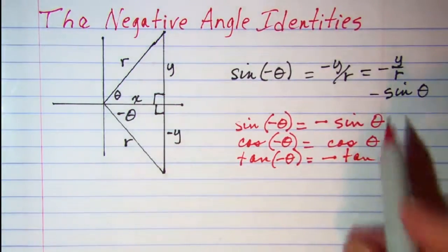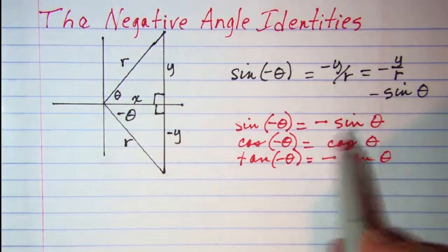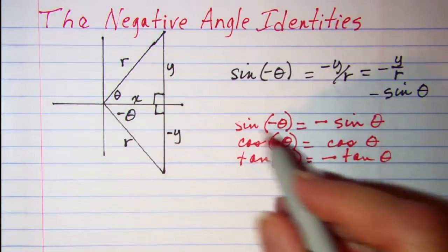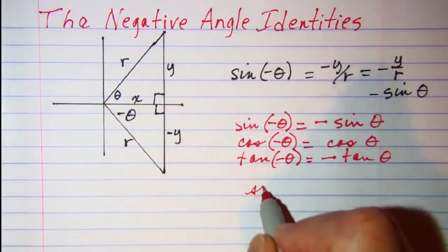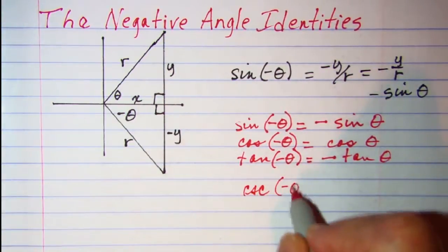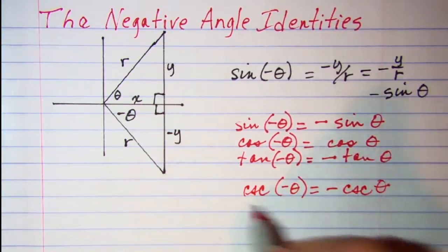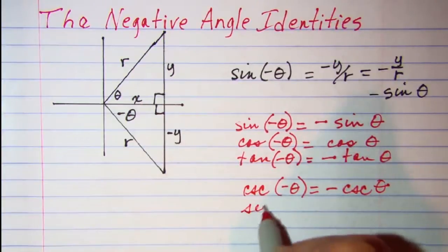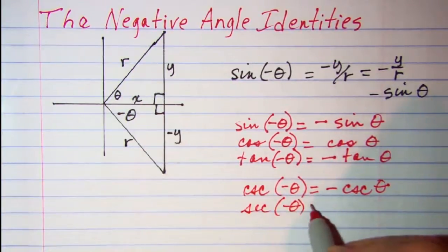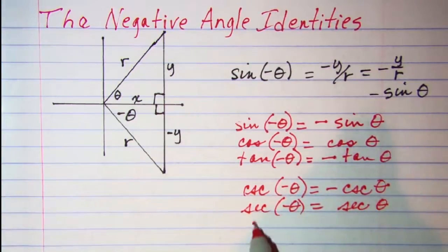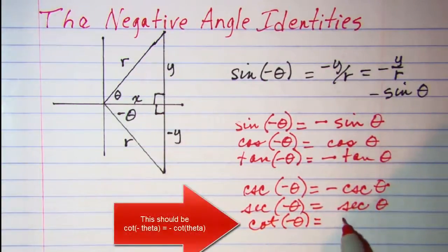Now if we do the reciprocals, they should have the same relationship. So I can write the cosecant of negative theta is equal to negative cosecant theta, and the secant of negative theta is equal to the secant theta, and then the cotangent of negative theta is equal to the cotangent of negative theta.